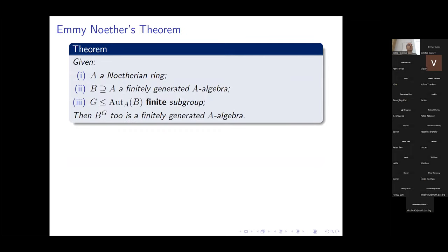We use this to prove Noether's theorem in a slightly more general form: given A a Noetherian ring, B a finitely generated A-algebra, and G a finite subgroup of automorphisms of B fixing A, then the ring of invariants B^G is a finitely generated A-algebra. The original version I proved earlier — that the invariant algebra of a polynomial algebra under a finite group is finitely generated — is a special case of this more general statement.